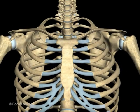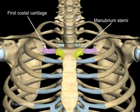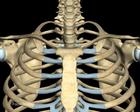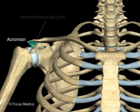It articulates medially with the manubrium sterni and the first costal cartilage at the sternoclavicular joint, and laterally with the acromion process of the scapula at the acromioclavicular joint.